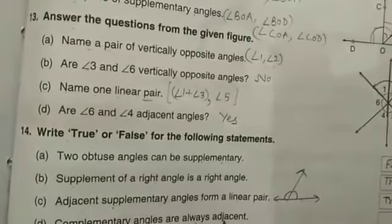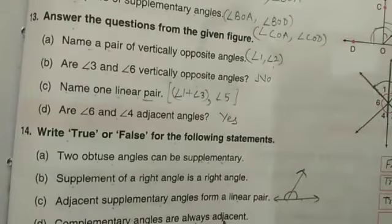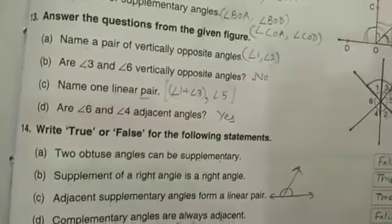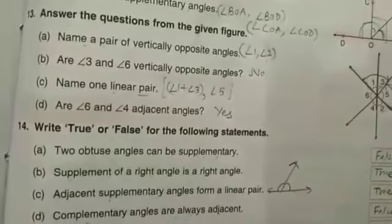Complementary angles are always adjacent. No, they may be non-adjacent also. So this is false. They may be or may not be.